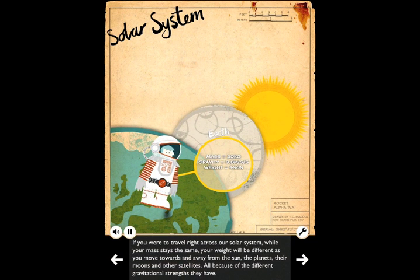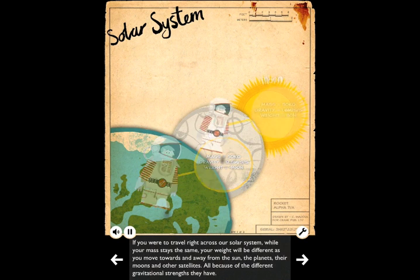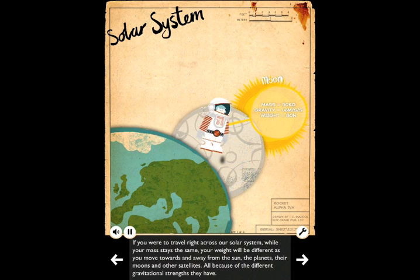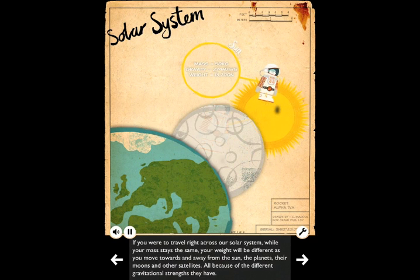If you were to travel right across our solar system, your mass stays the same. Your weight will be different as you move towards and away from the sun, the planets, their moons and other satellites, all because of the different gravitational strengths they have.